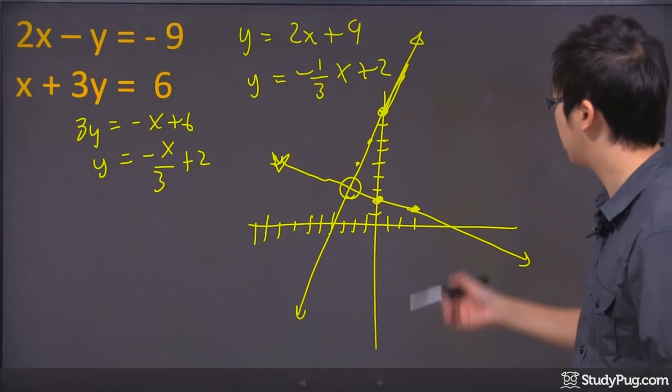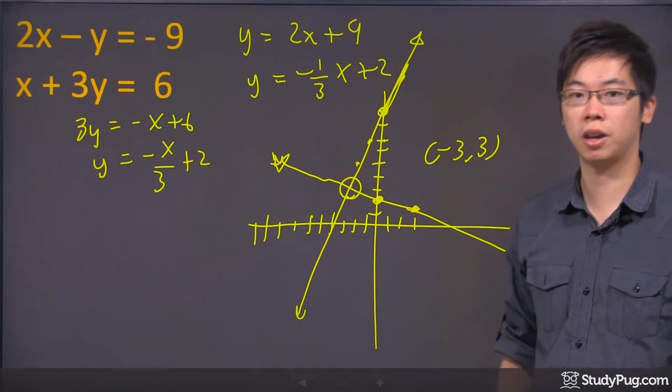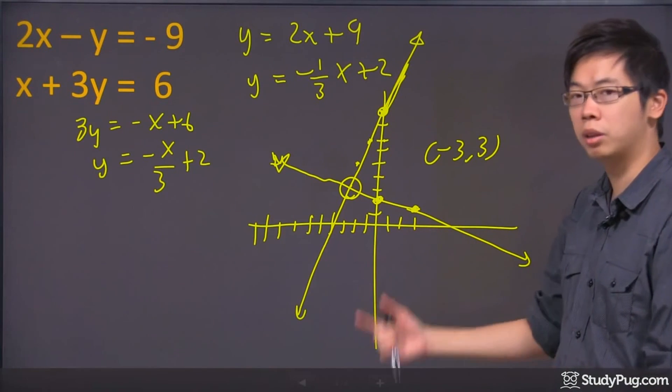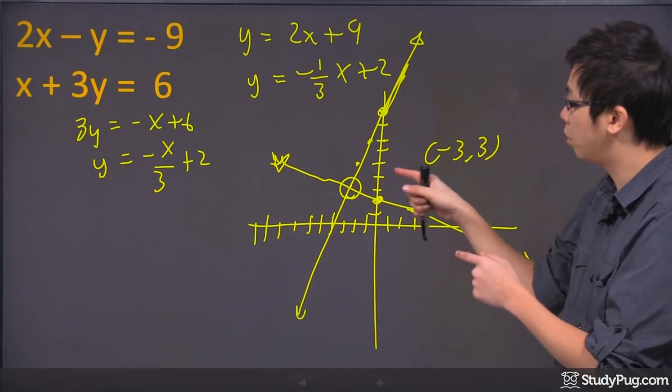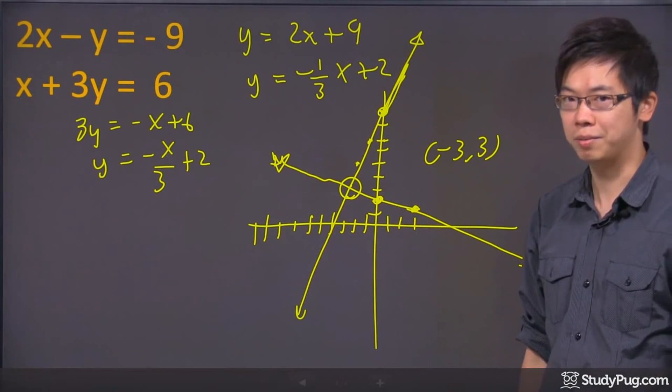That's the point of intersection. If you're wondering where that point is, it's at (-3, 3). So if you have grid paper, you can plot them more accurately, and you'll see that both lines intersect at (-3, 3). Thanks so much.